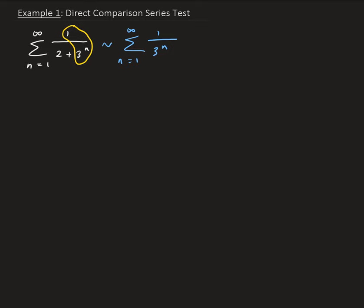So in this case, this is a geometric series. And why is that? Well, we can write it this way. So this is a geometric series with r equals to one-third.